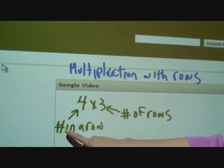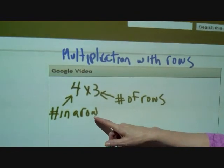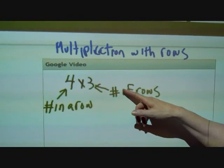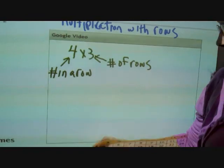The first number is going to show the number in a row, and the second number, the number of rows. And I'd like to demonstrate that for you.